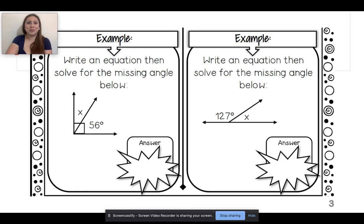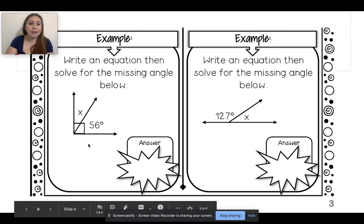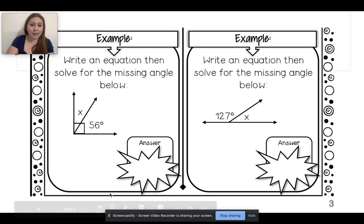All right, so for the example for complementary, write an equation then solve for the missing angle. So here is my image. I do not know what this angle is going to be. That's the reason why there's an x. However, I do know that this is 56 degrees. So how can I figure out what this missing angle is going to be? Well, what is the total of a right angle?